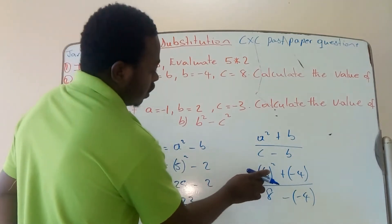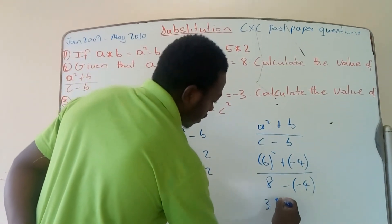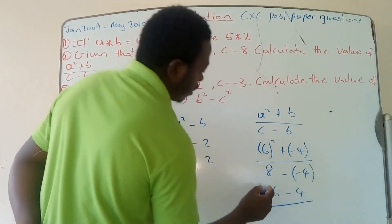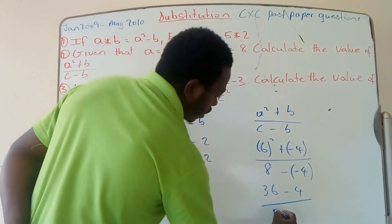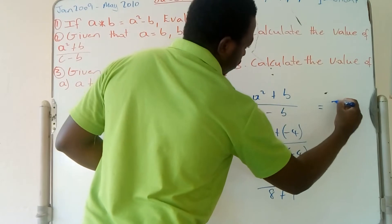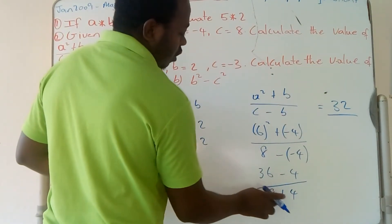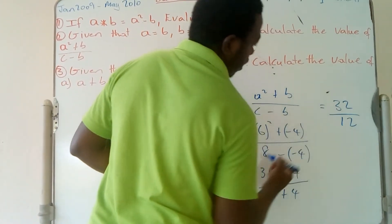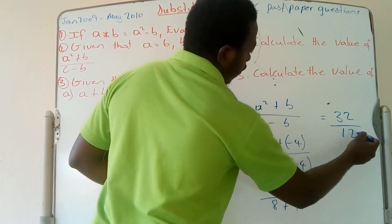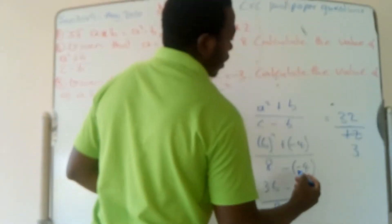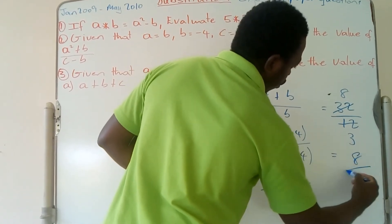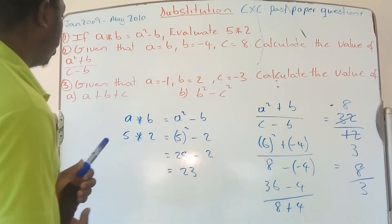6 squared is 6 times 6 which gives 36. Positive times negative gives minus, so that's 36 - 4 in the numerator. Negative times negative gives positive, so the denominator is 8 + 4 = 12. So we have 32 over 12. Simplifying by dividing both by 4: 4 into 32 goes 8 times, and 4 into 12 goes 3 times. Final answer is 8 over 3.